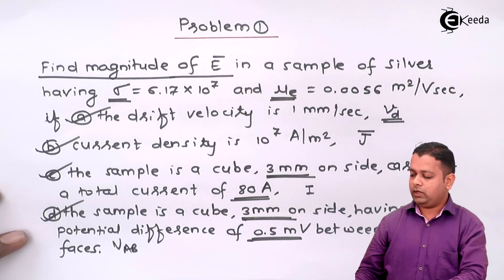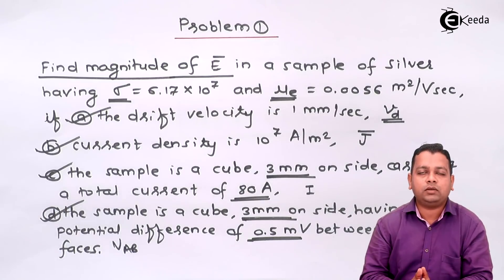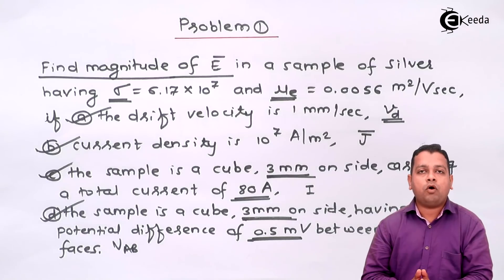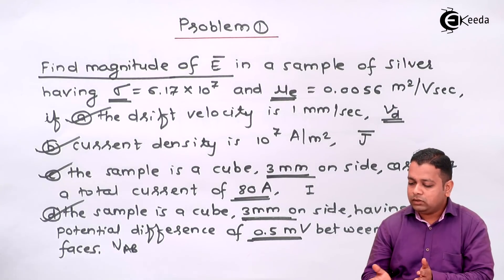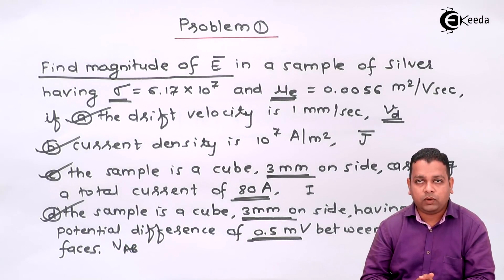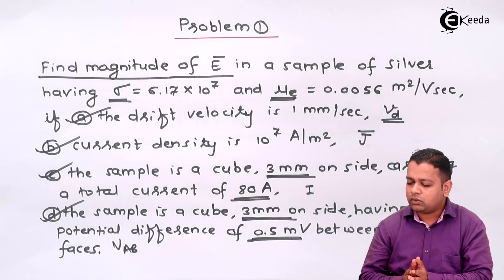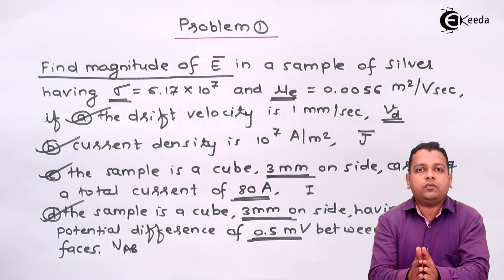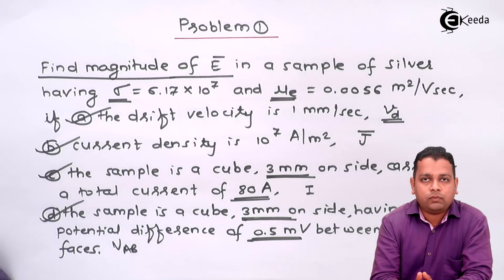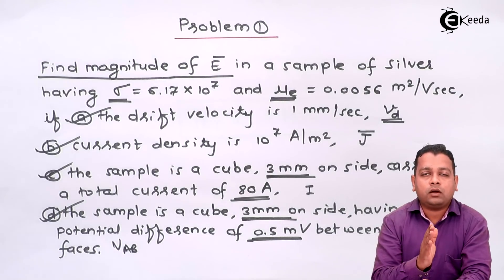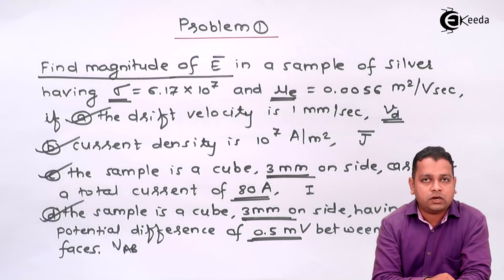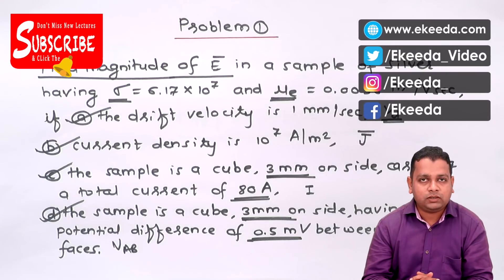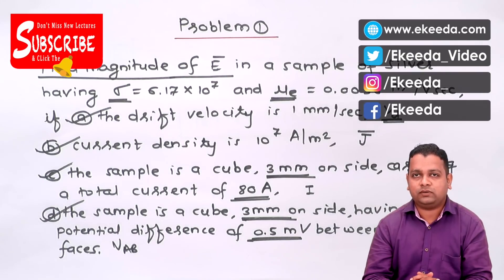I hope you have understood well the concepts to determine electric field intensity when conductivity, mobility of charge carriers, current density, drift velocity, and potential difference are given. In the subsequent lecture, we are going to solve one more problem based on the concepts of conductors, properties, and boundary conditions. To get more information on electromagnetic field theory, please subscribe to the Ikeda channel. Thank you.